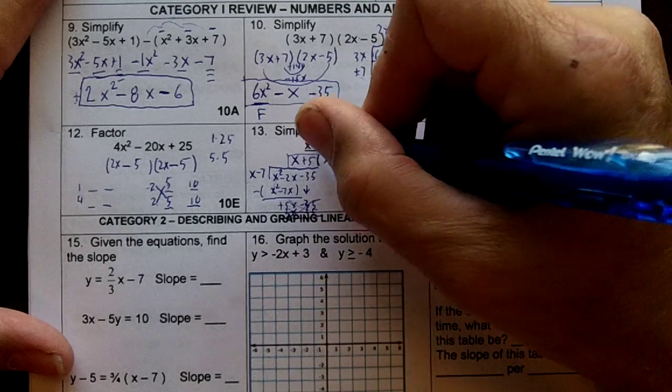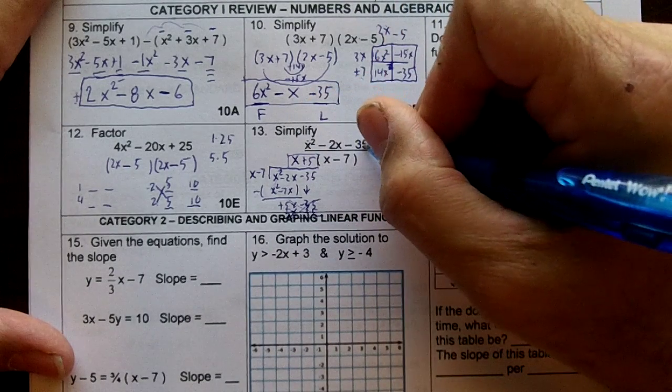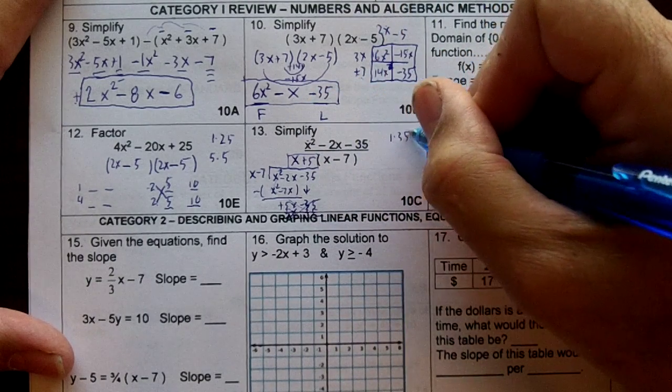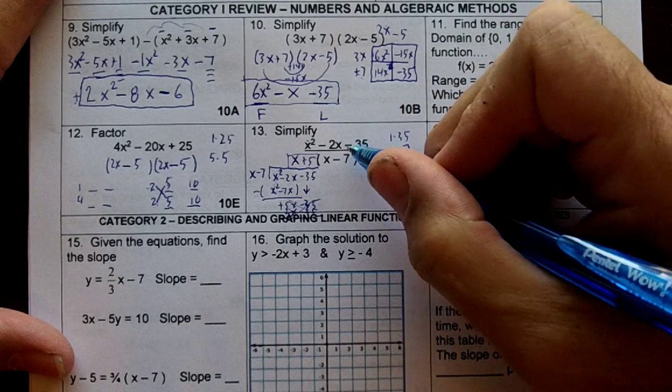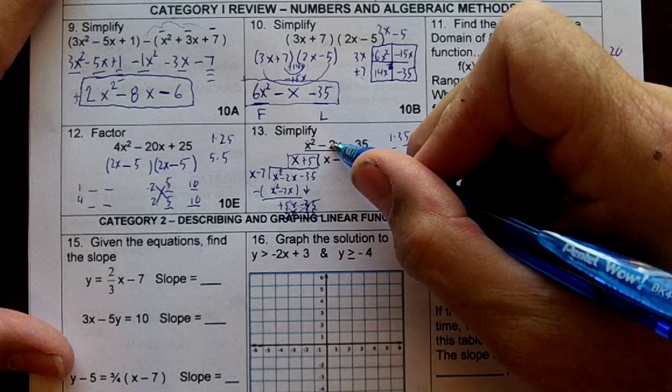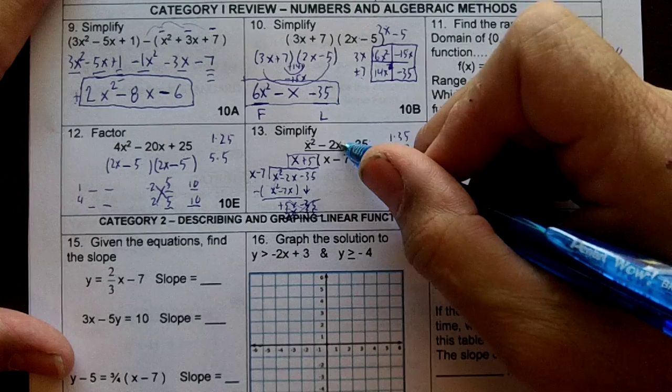The other way to do this is to factor. Write down the factors of 35. It's 1 and 35 and 5 and 7. We want to subtract and get 2. So 7 and 5 subtracts and gives us 2.